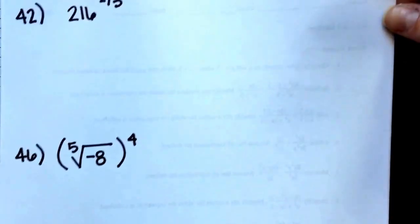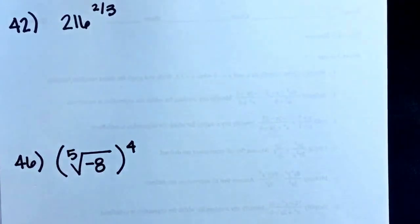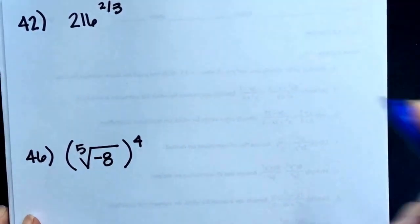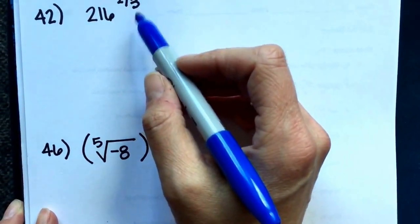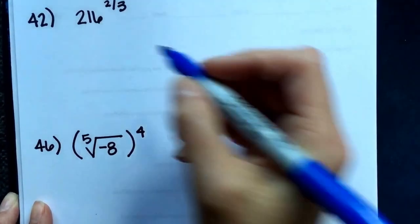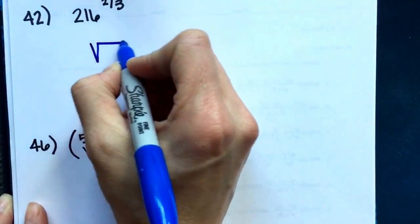The next three involve simplifying but also going back and forth, writing it between exponential form and radical form. Problem 42 is written with a rational exponent right now. We need to change it into radical form.